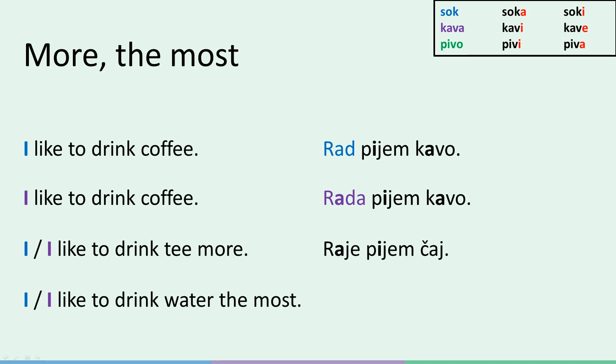And the same goes for 'the most': najraje pijem vodo — the sentence is the same for males and females. So a male person would go rad, raje, najraje; and a female person would go rada, raje, najraje. Hopefully this helps you understand how to use the word rad. I hope the lesson wasn't too grammar heavy. Until next time — good luck, study hard, and aim for the stars.